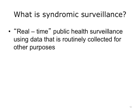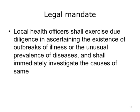Syndromic surveillance is an example of HIT applied to public health practice. Syndromic surveillance is defined as real-time public health surveillance using data that is routinely collected for other purposes. It has a long-standing legal mandate to conduct surveillance. The example shown is for New York State; other states have similar legal mandates.